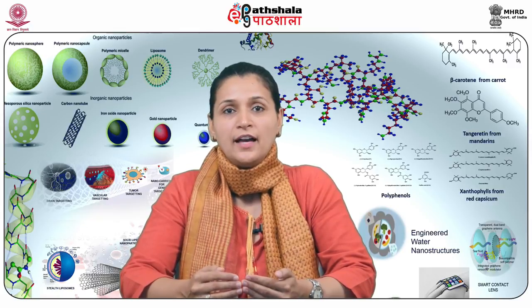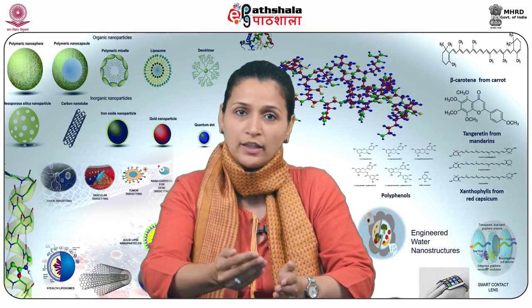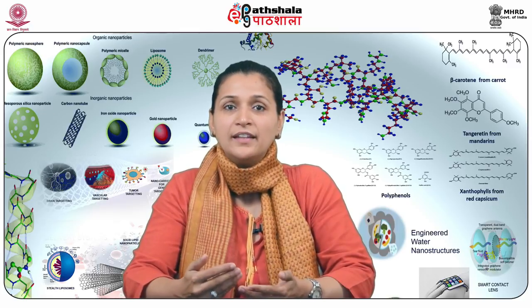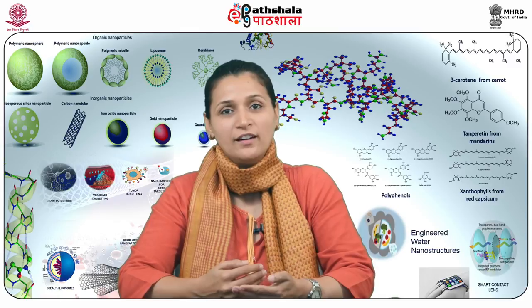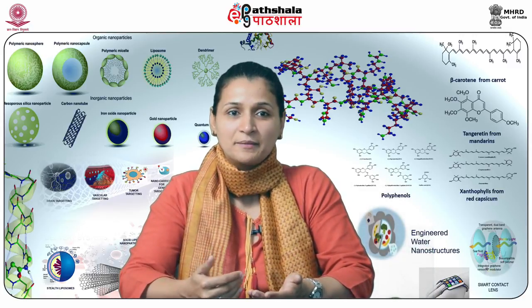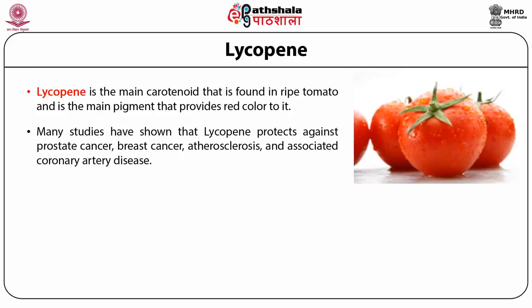Carotenoids are identified as among the most powerful antioxidants, comparable only to polyphenolic compounds, which we will address later in the module. Carotenoids also have the ability to boost the immune system — this is the basis for the traditional saying that consuming appreciable amounts of fruits and vegetables reduces the incidence of sickness. Lycopene is another significant nutraceutical present in tomatoes, which protects against prostate cancer, breast cancer, atherosclerosis, and associated coronary artery diseases.